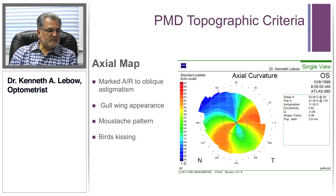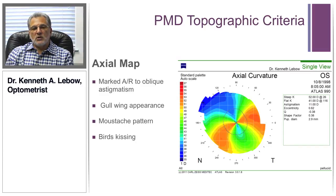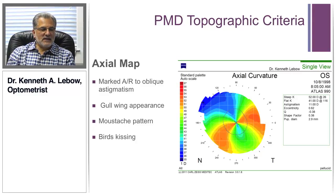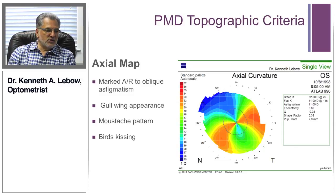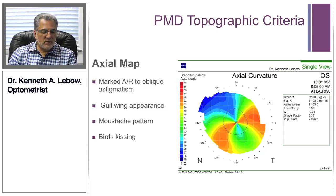Clinically, pellucid's is uniquely different from keratoconus because it has a fairly large amount of against-the-rule or oblique astigmatism. Usually you find much more irregular astigmatism with keratoconus. In the slide in front of you now, it almost appears as if there are birds kissing each other — a very typical form factor in pellucid's marginal degeneration. Some have described it as a mustache pattern or a gull-wing appearance.